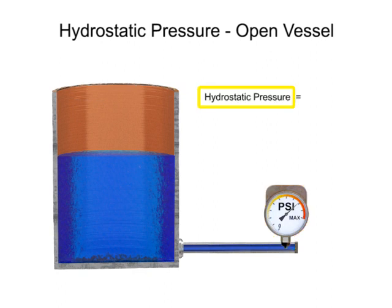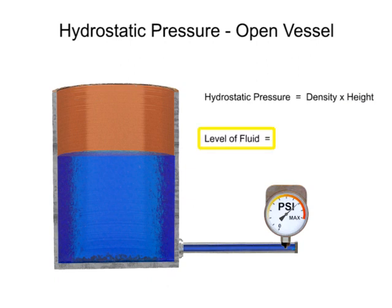To calculate hydrostatic pressure, the density of the material is multiplied by the height of the column. The level of fluid in a column can be determined by dividing the pressure value by the density of the material.